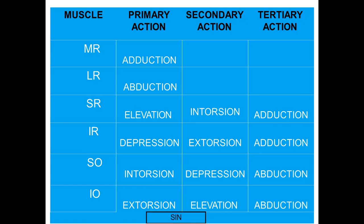Summary of actions: Medial rectus — adduction only; lateral rectus — abduction only (primary actions). Superior rectus — primary elevation; secondary intorsion; tertiary adduction. Inferior rectus — primary depression; secondary extorsion; tertiary adduction. Superior oblique — primary intorsion; secondary depression; tertiary abduction. Inferior oblique — primary extorsion; secondary elevation; tertiary abduction.